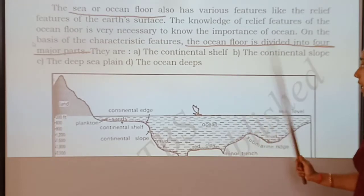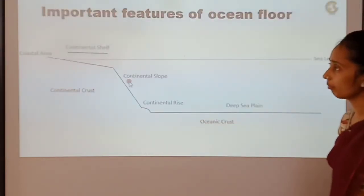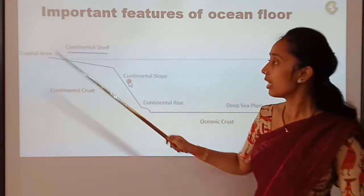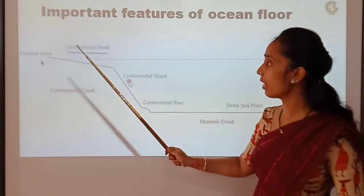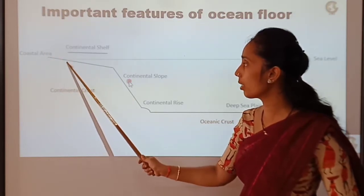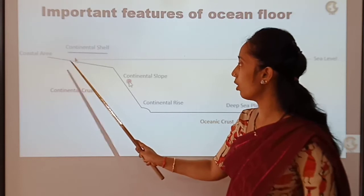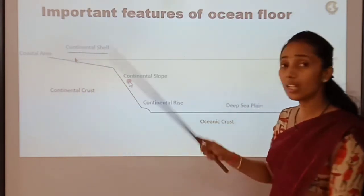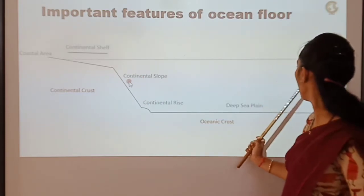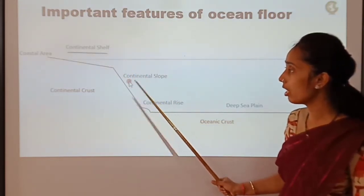Here, the coastal area refers to the land phase where we exist. The continental shelf refers to where the land and the water body start meeting. This part — what sea or water we get to see on the earth up to sea level, up to a beach — that is the continental shelf. And the continental slope follows from there.